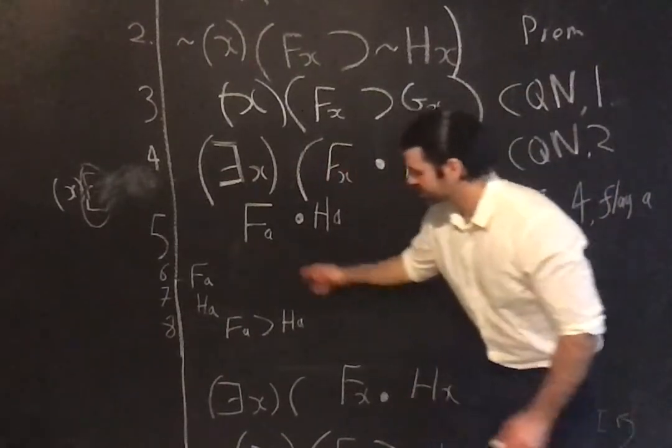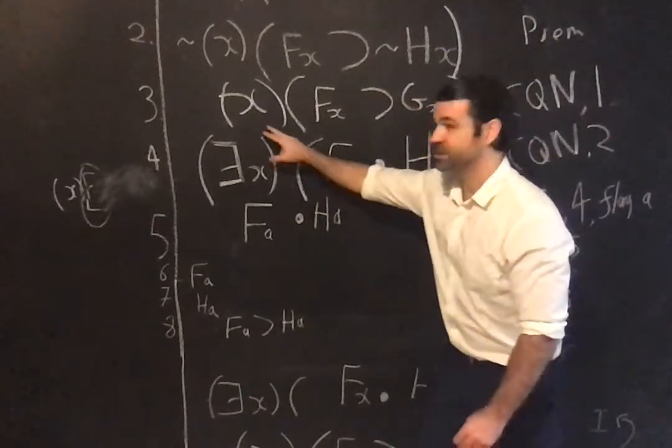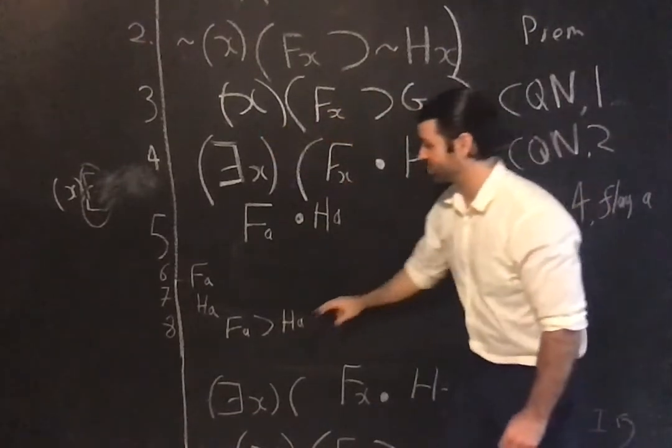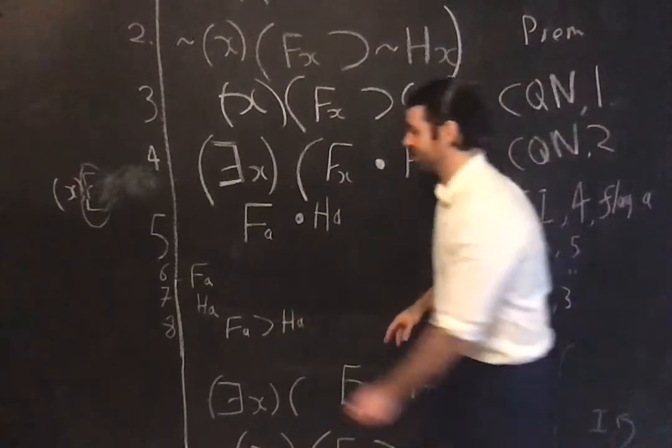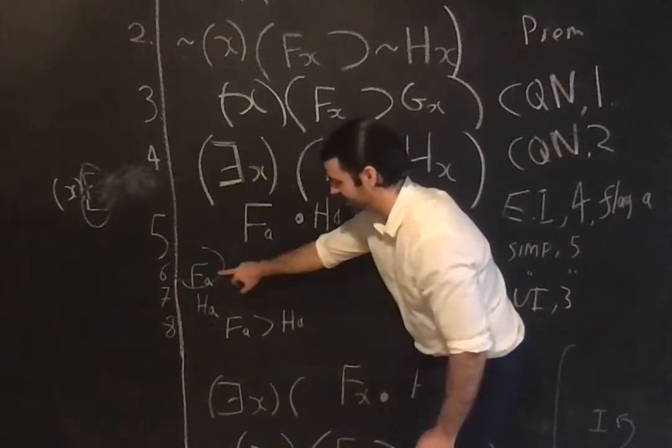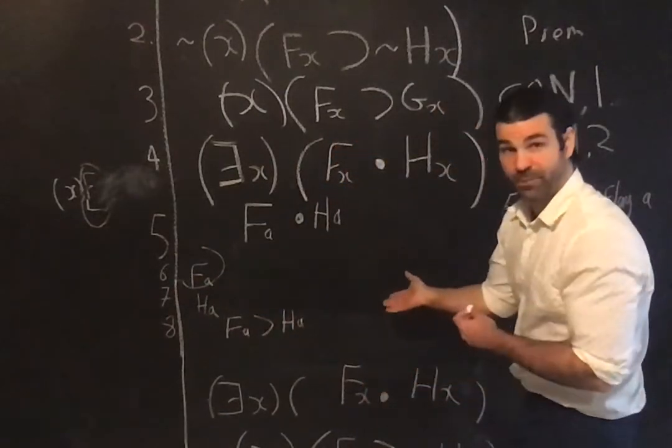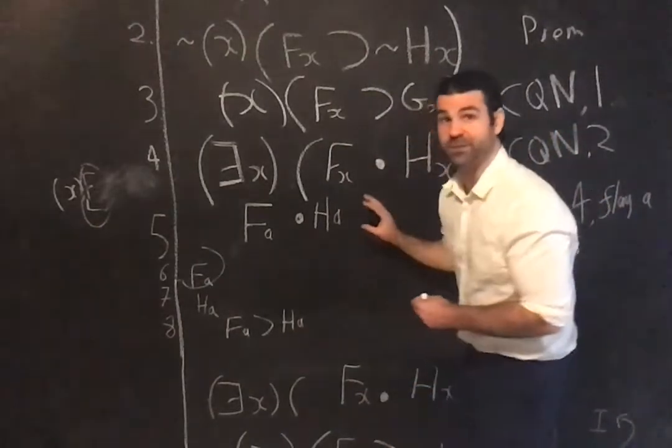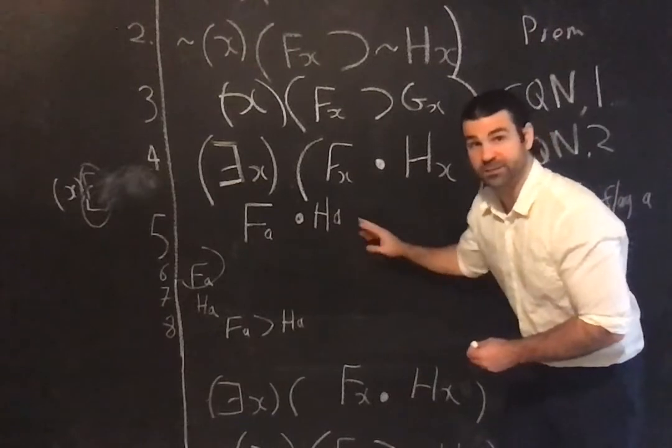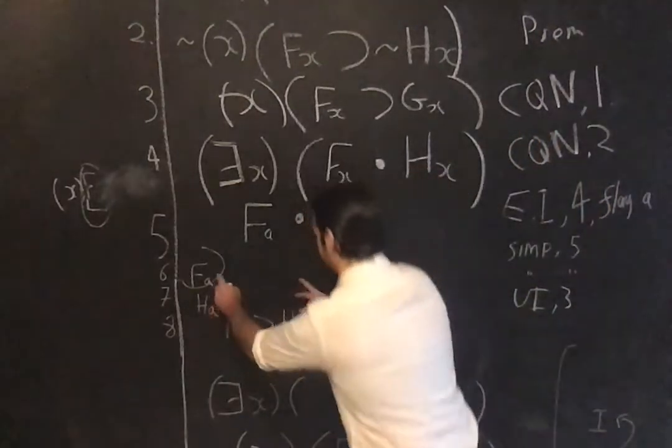Okay, so we've got F, A, and H, A, sorry, this is indented, that's not indented for any reason, just because I'm untidy. And notice that this is a conditional. The result of instantiating from this changes form from a universal statement to a conditional, and look what I've got. So as I said, truth functional reasoning after the instantiations. I've got, I've got a conditional, and I've got the antecedent of the conditional. Thus, I can infer by modus ponens.